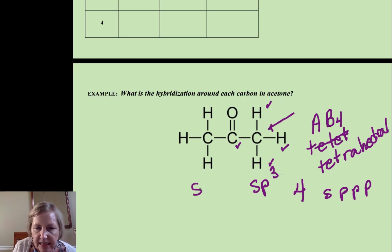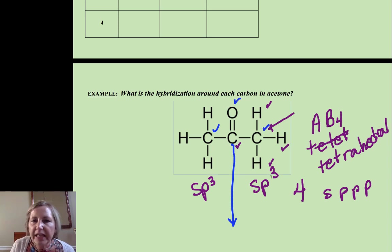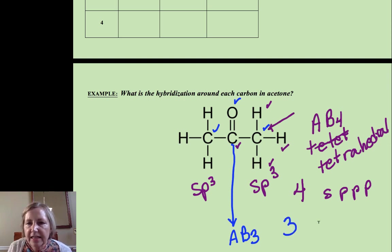Okay, now let's look at the center carbon. It's a little different. That center carbon has one, two, three—three things around it. So that's an AB3 structure, so B plus E is three. So I need an S, a P, and a P. So this one is SP2 hybridized. Okay, hope that helped. Take care and good luck with chemistry!